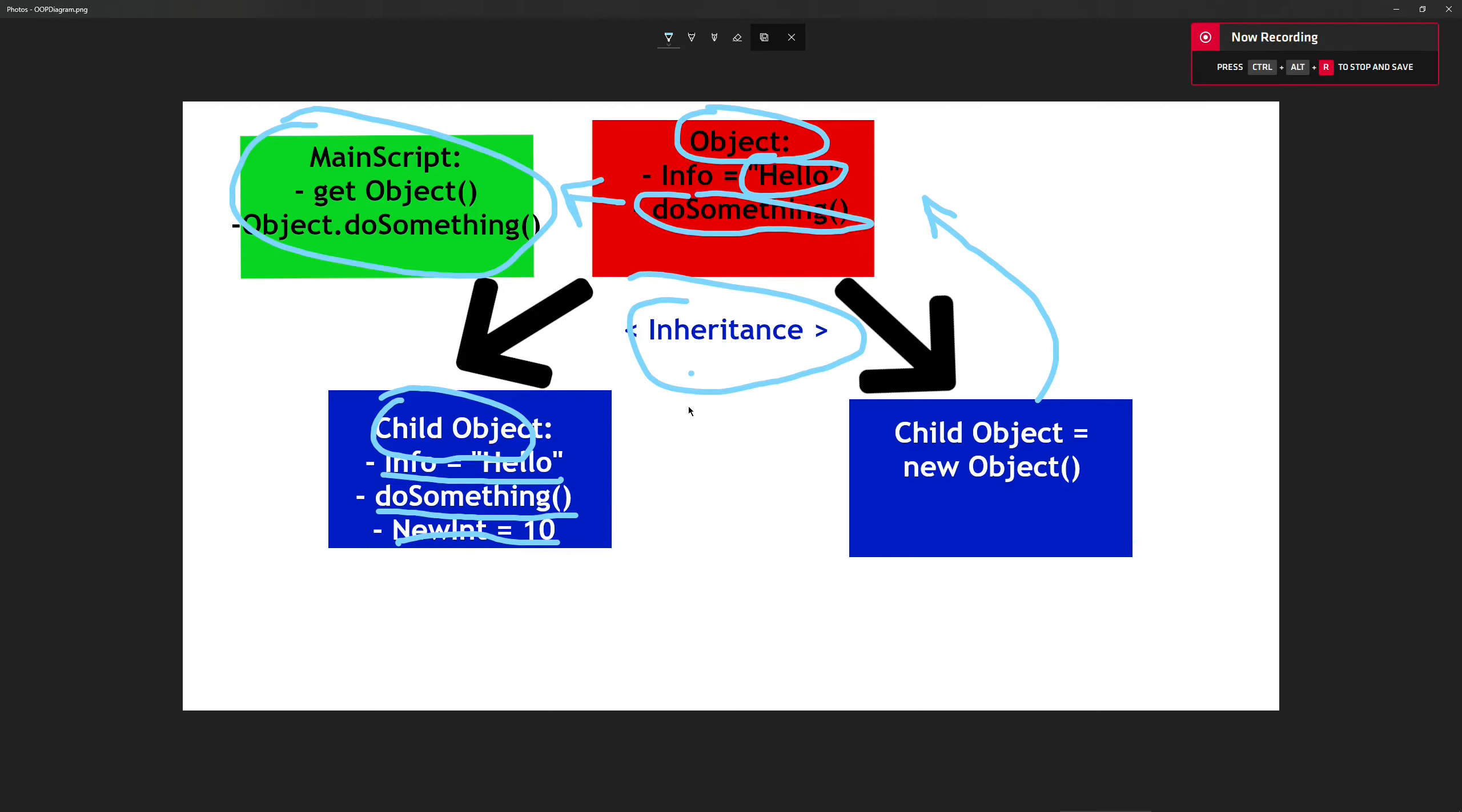When you're programming, you can use objects in either of these ways: both the inheritance route where one child inherits all the properties and functions of the parent,